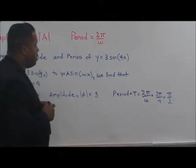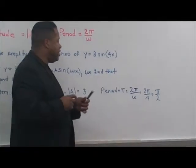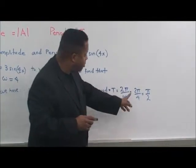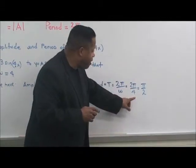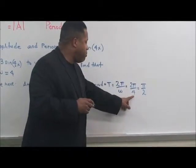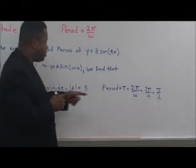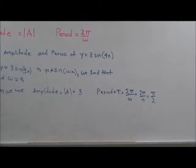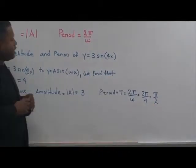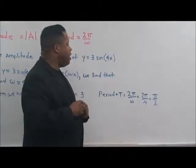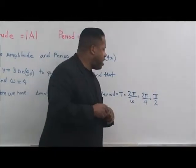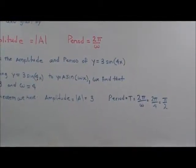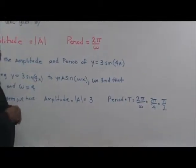The period is equal to 2 times pi over omega, and that's going to be 2 pi divided by 4, which goes in place where omega is, so when we reduce that, we have the period at pi over 2. Let's do another problem.